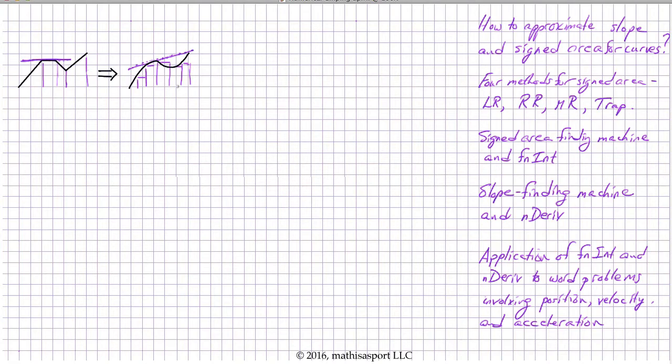We started off with signed area, and we came up with four methods for approximating the area under the curve. Three of them were almost identical. Namely, we partitioned the curve into a set of rectangles.